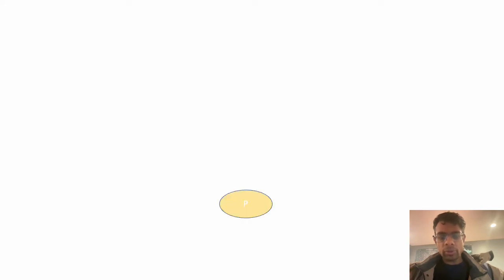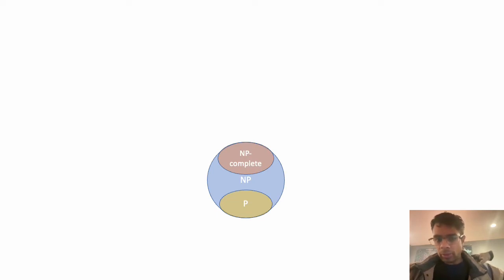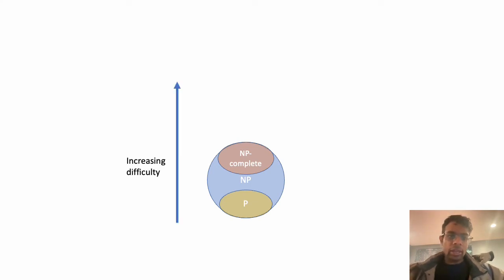Let's review the three sets covered so far. Set P: all decision problems solvable in polynomial time. Set NP: all decision problems verifiable in polynomial time, worst case with the most efficient algorithm. Set NP-complete: also decision problems verifiable in polynomial time, but all problems in NP — including P — can be reduced to these problems. So if you solve one of them in polynomial time, all three sets collapse into one. The level of difficulty clearly increases from P to NP to NP-complete.